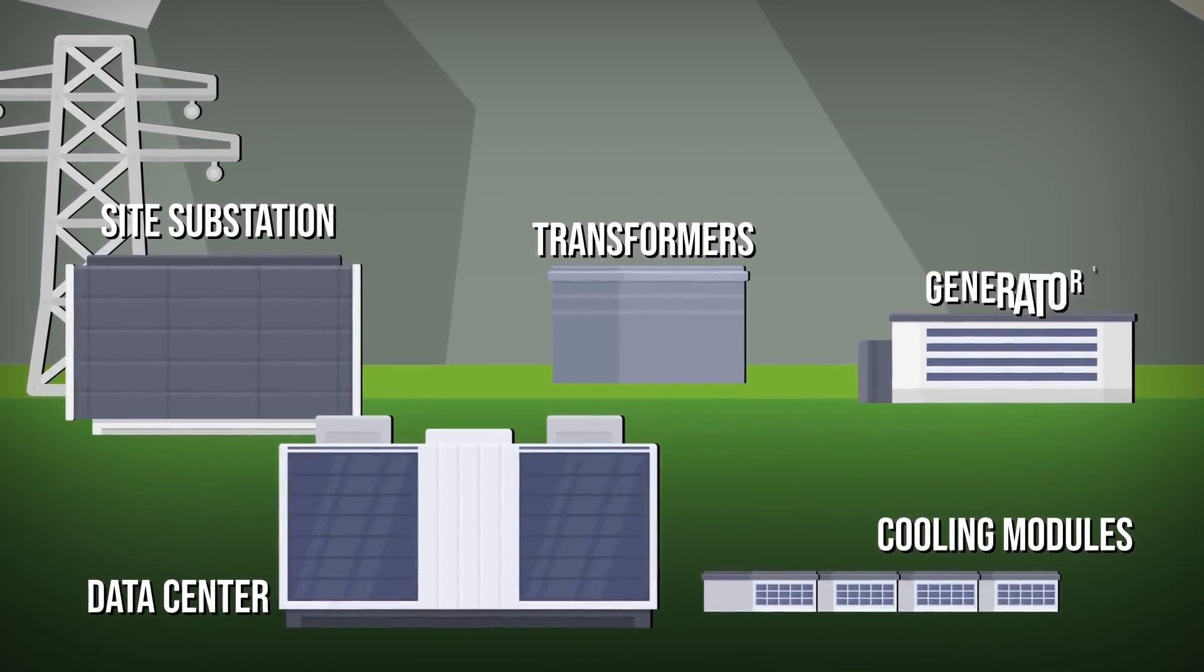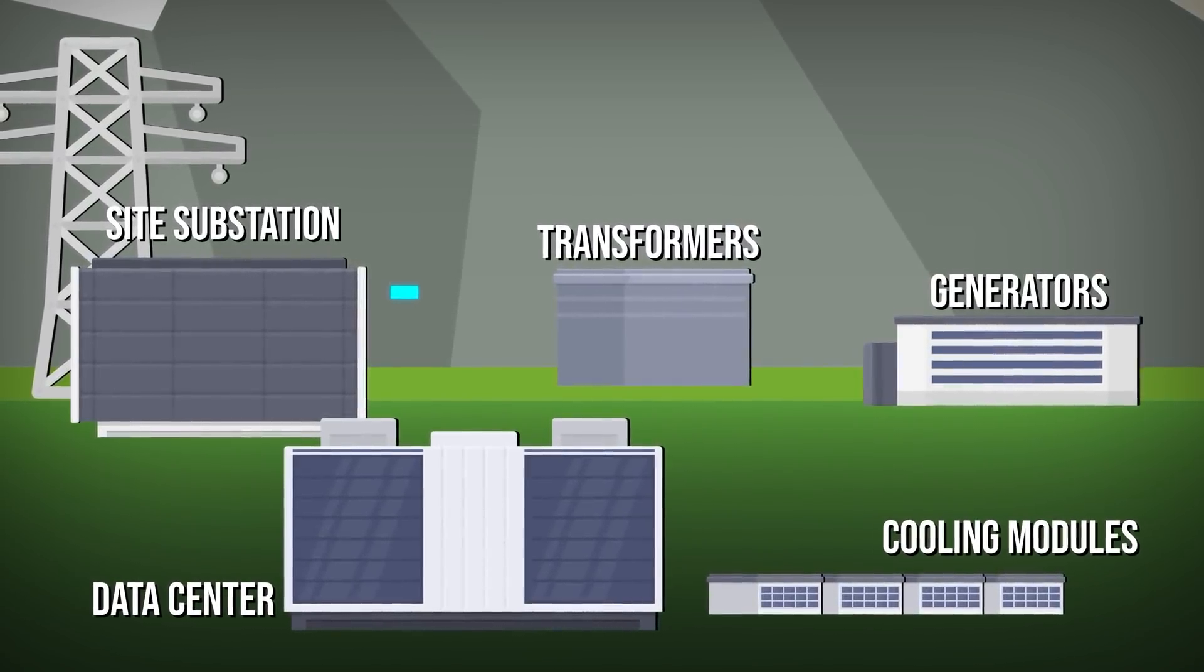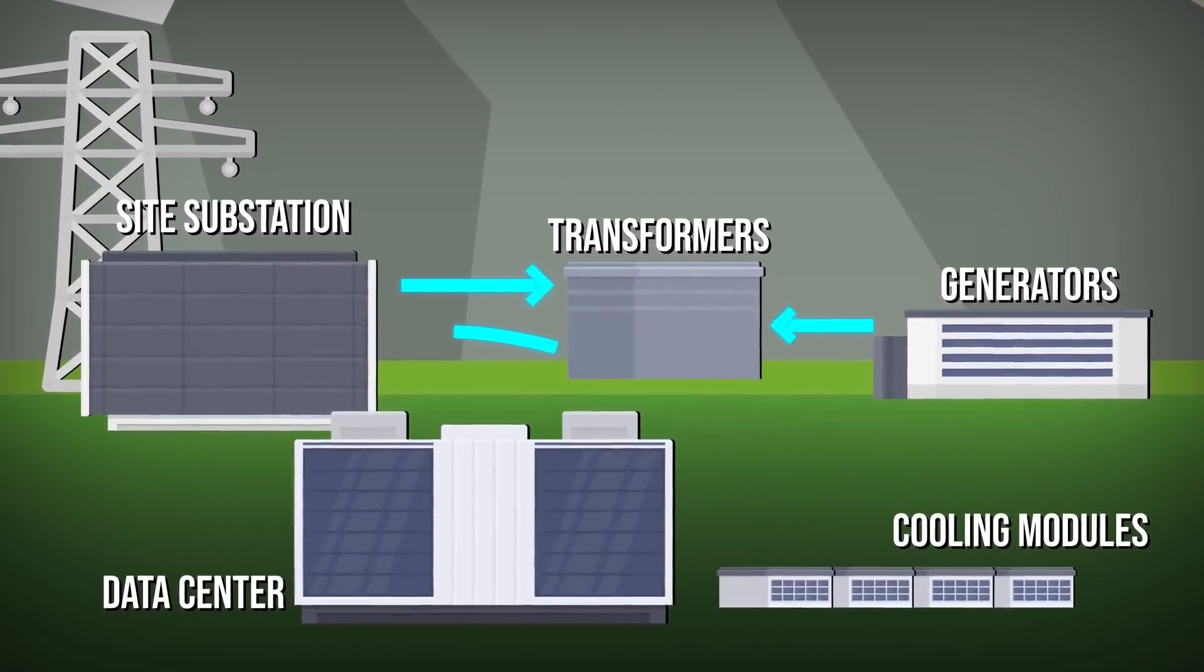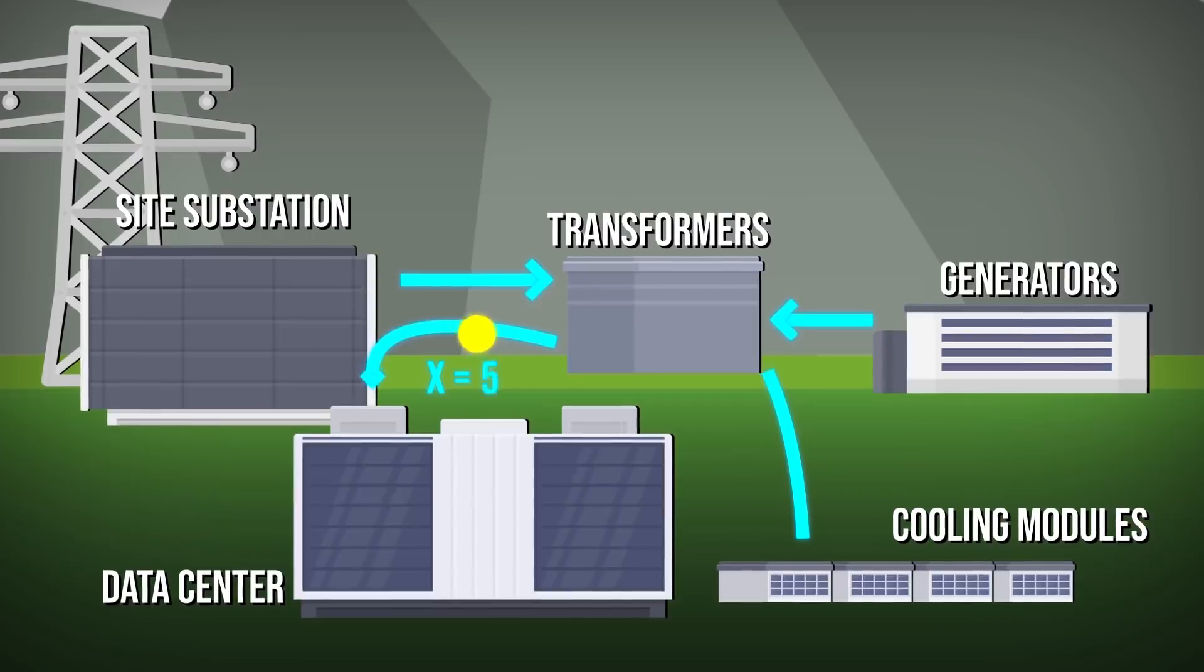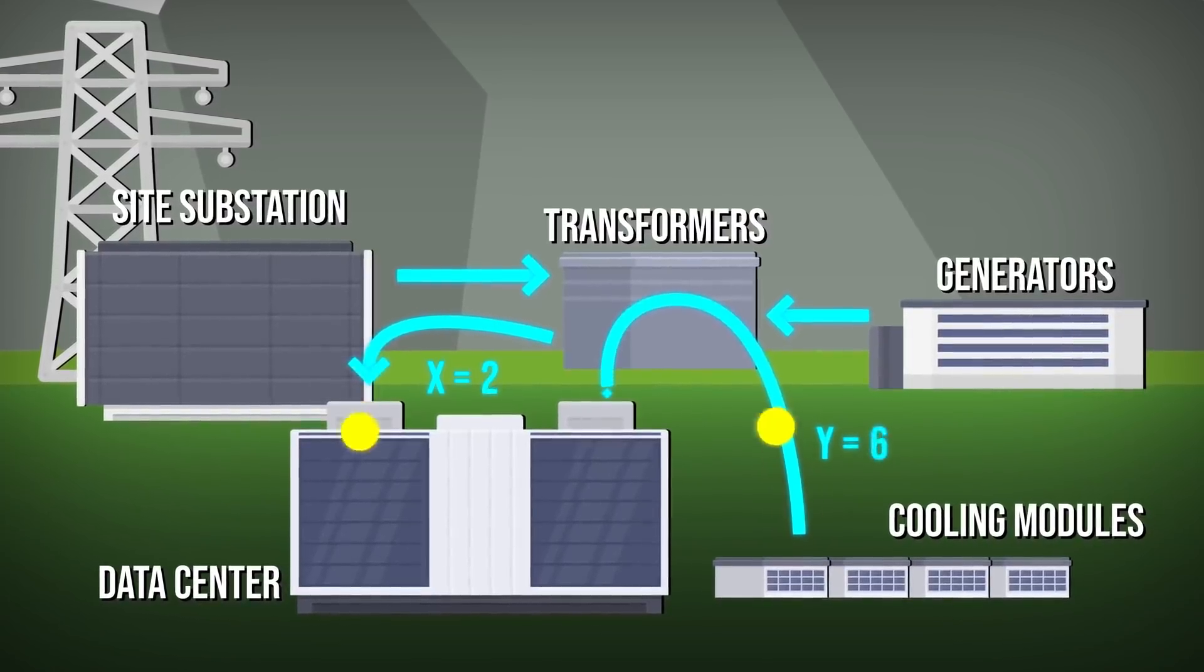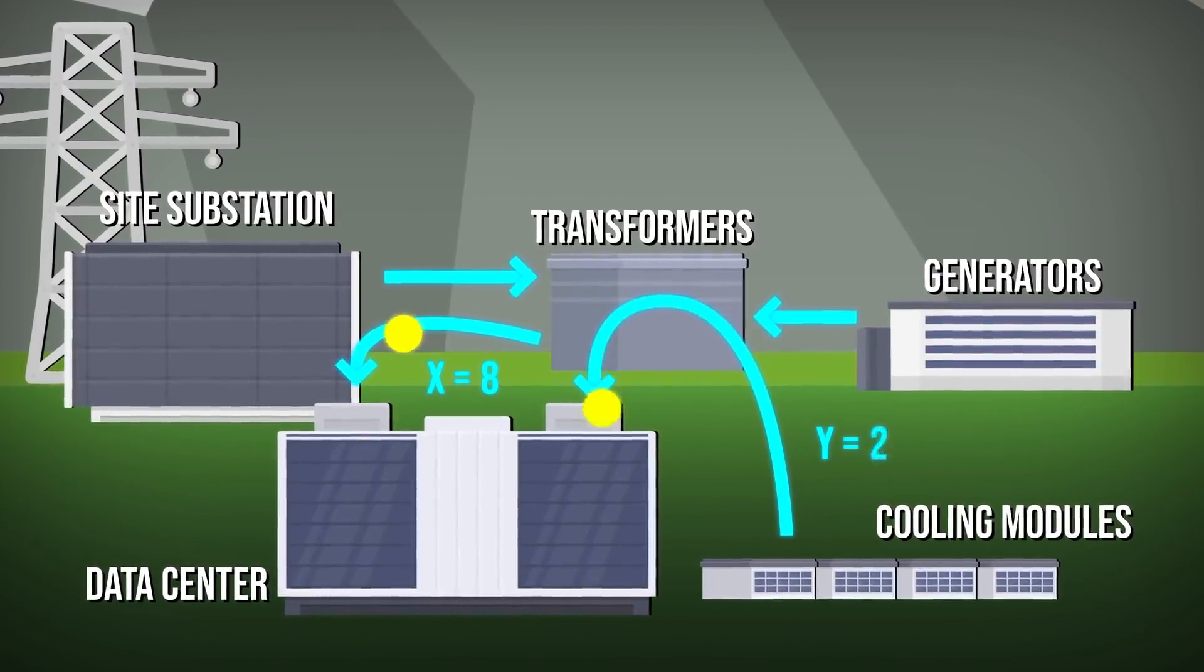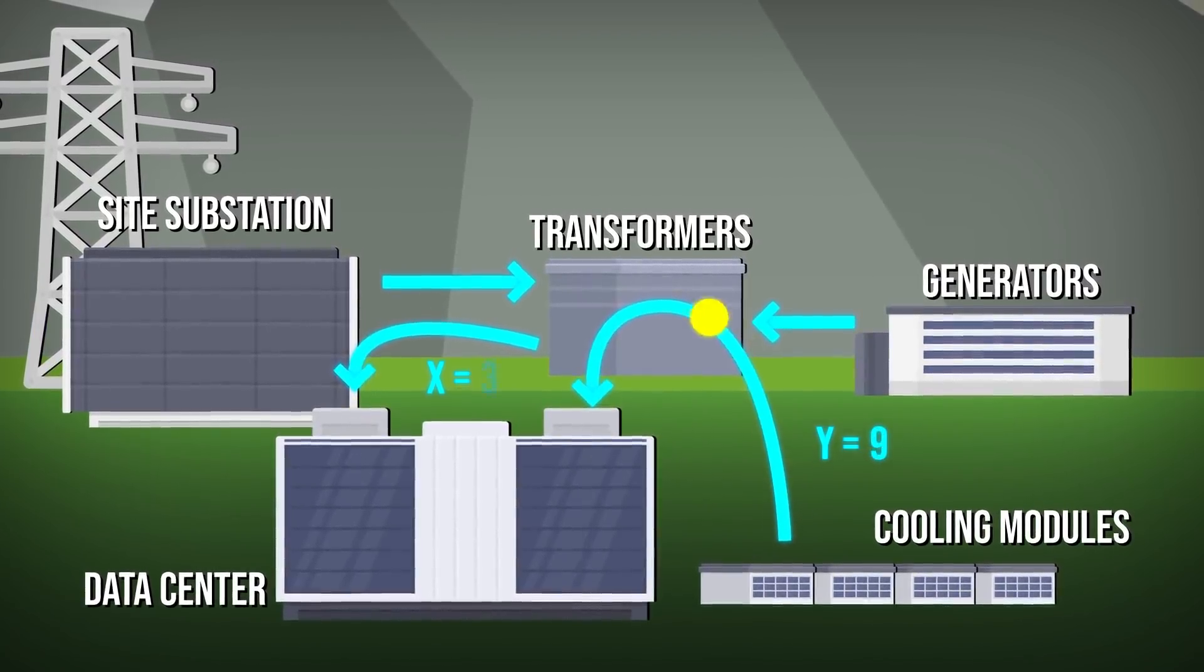Google recently used RL to reduce the amount of energy they used in their data center by up to 40%. Just like a laptop generates heat, their massive racks of servers generate a lot of heat. But too much heat can damage the servers, so a cooling system is necessary to help maintain a certain temperature.